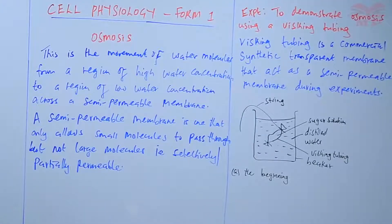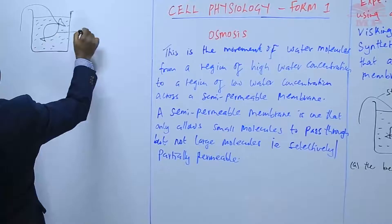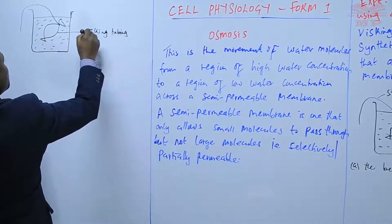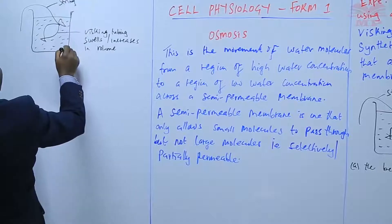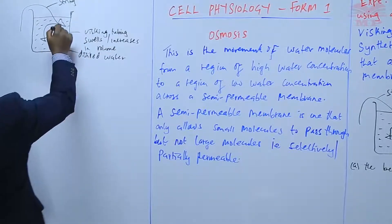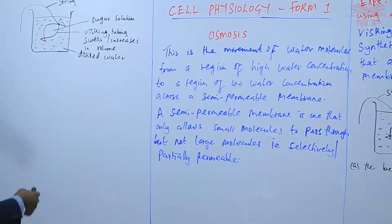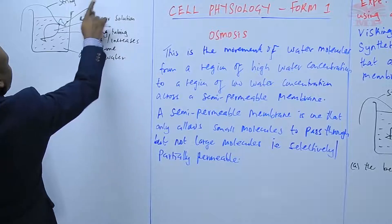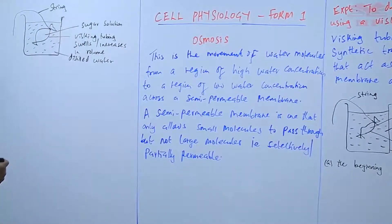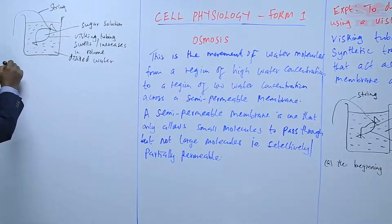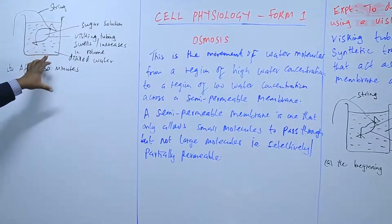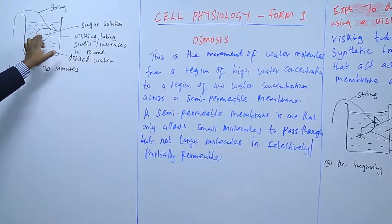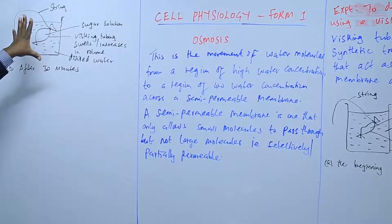After 30 minutes, this is what we observe: the visking tubing swells or increases in volume. The distilled water is still outside, but the volume of the sugar solution inside increases — and that is what causes the visking tubing to swell.